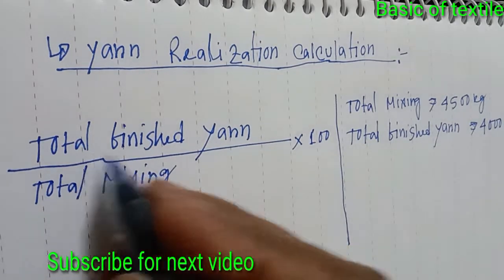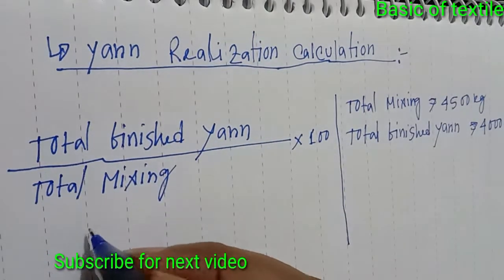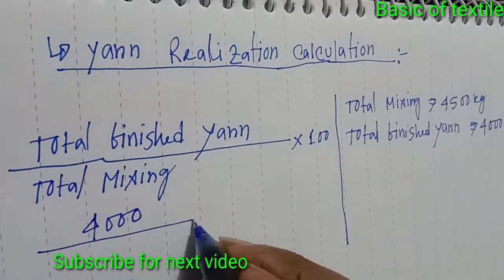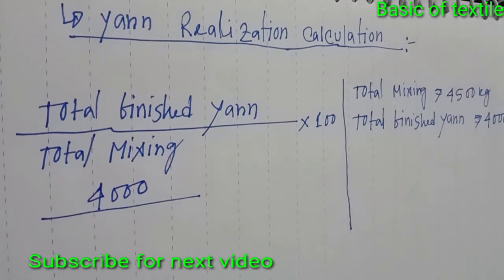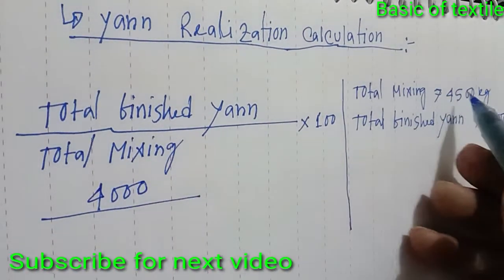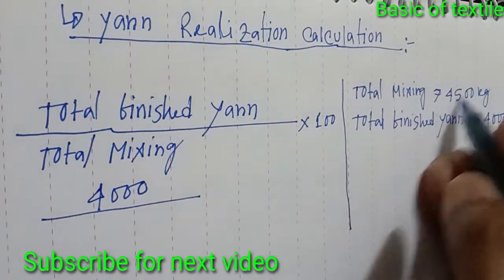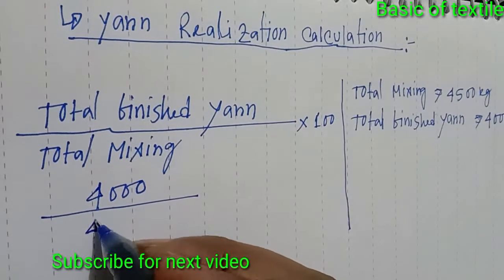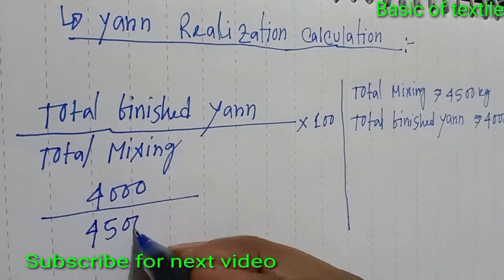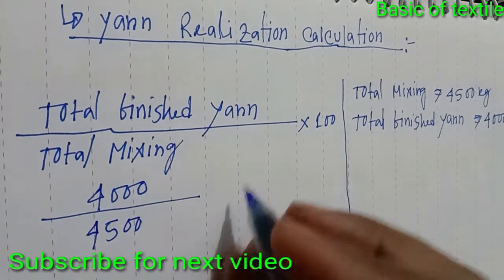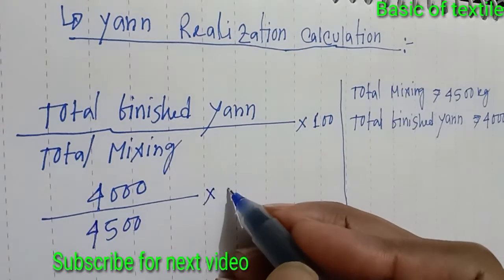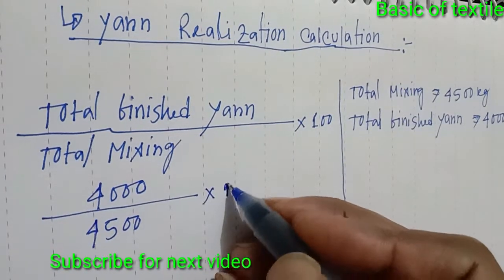Total finished yarn 4000 divided by total mixing 4500, multiplied by 100.